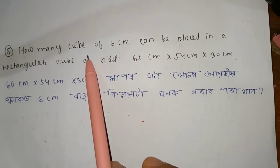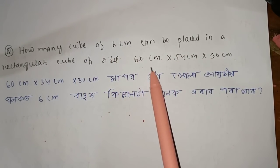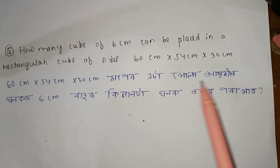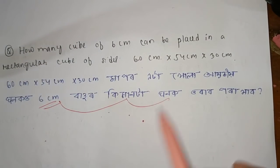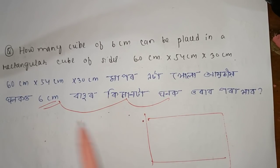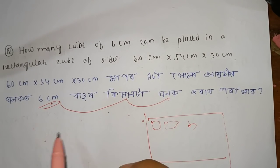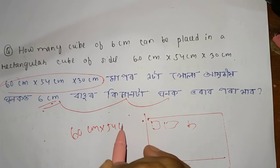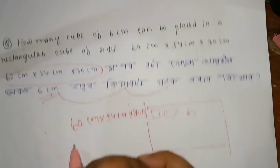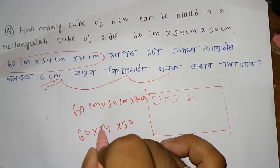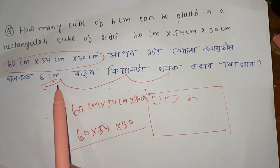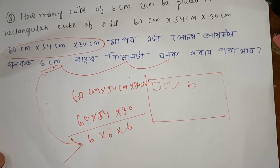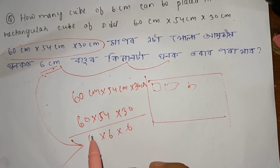The next question is: how many cubes of 6 centimeters can be placed in a box of dimensions 60 centimeters, 54 centimeters, and 30 centimeters? The volume of the box is 60 x 54 x 30. Each small cube is 6 x 6 x 6. Dividing: 60 divided by 6 is 10, 54 divided by 6 is 9, 30 divided by 6 is 5. So the total number of cubes is 10 x 9 x 5, which equals 450.